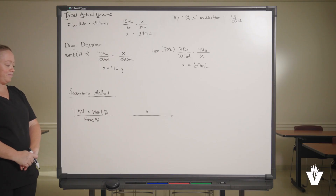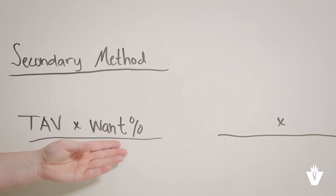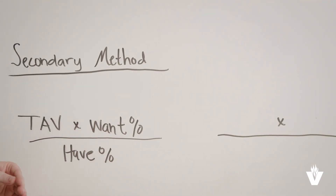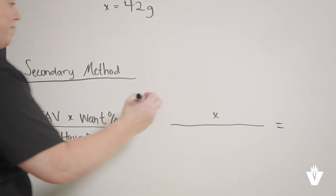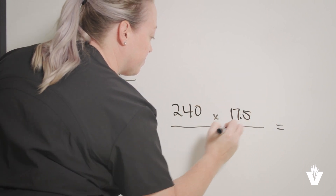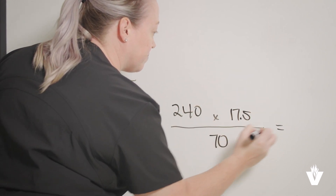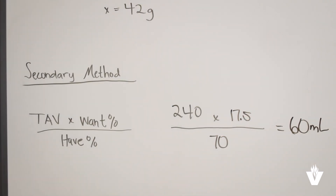There is a secondary way to calculate this for the basis. You can use the total actual volume multiplied by the desired percentage — the wanted percentage based on the order — and divide that by the in-stock percentage, which is what the pharmacy has on hand. This is a different formula you can use; use whichever makes the most sense to you. If we did it the second way for the dextrose, we would have 240 milliliters multiplied by 17.5, then divide that by 70, which totals 60 milliliters required for the prescription.